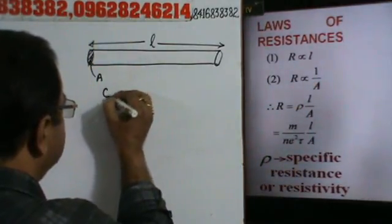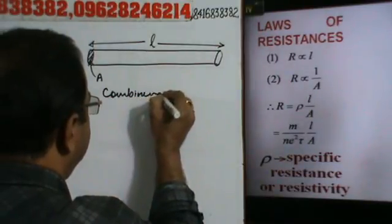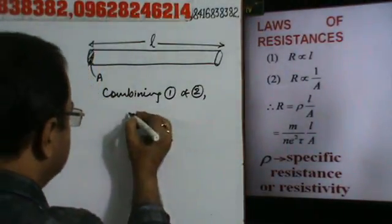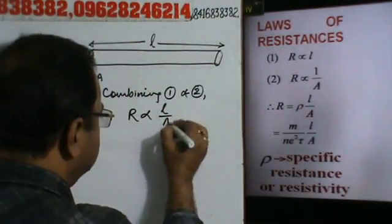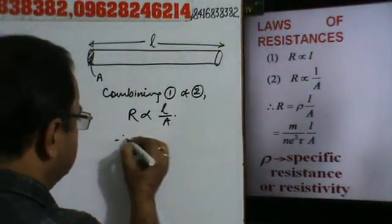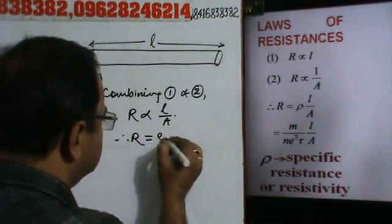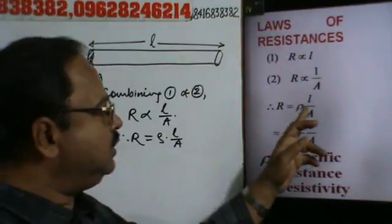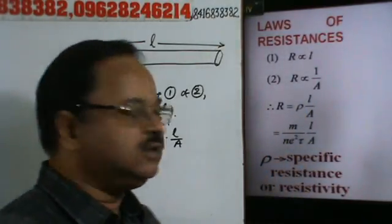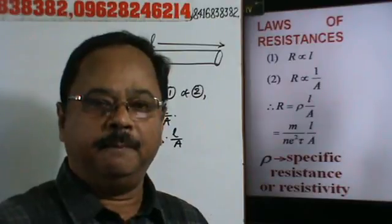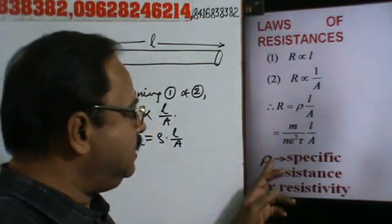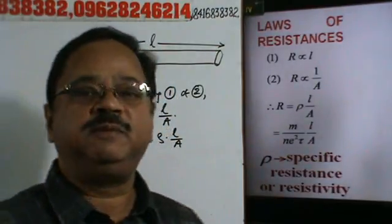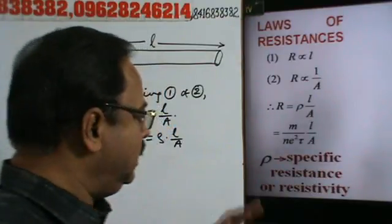Combining 1 and 2, we have R proportional to L by A, and R will be equal to rho times L by A. This rho is known as specific resistance or resistivity of the material of the conductor. This is a characteristic of the material of the conductor.